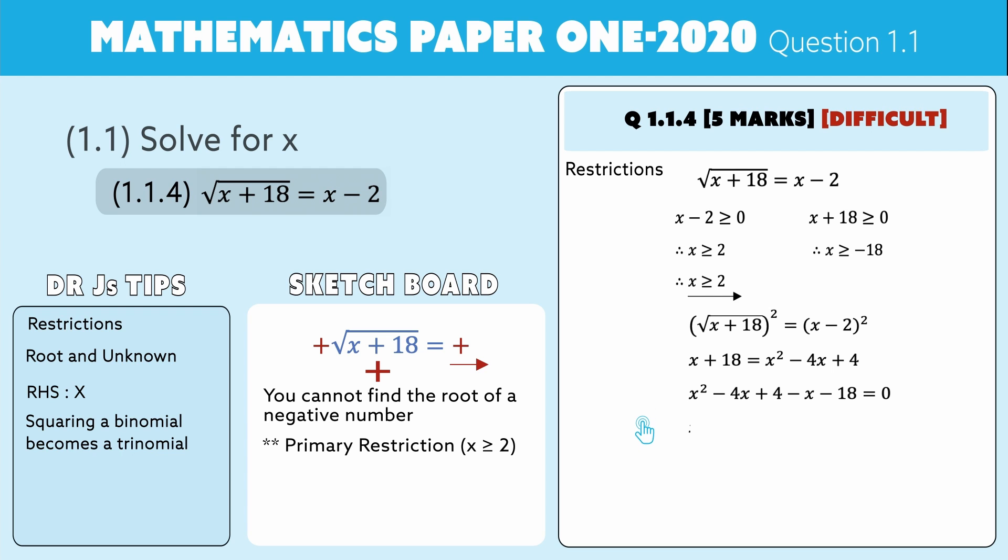We can factorize quite easily. We have two brackets, it's a quadratic, so we have x and an x. The factors of 14 that will give us minus 5 is minus 7 times a positive 2, which will give us the negative 5. Now we can solve: x is equal to minus 2 or x is equal to 7.